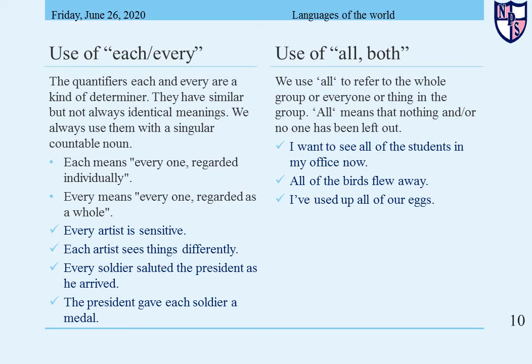Use of 'all': we use 'all' to refer to the whole group, everyone, or everything in the group. All means nothing and no one has been left out. Examples: 'I want to see all of the students in my office now.' 'All of the birds flew away.' 'I have used up all of our eggs' — all eggs that were present have been used up.